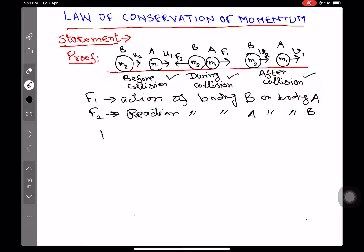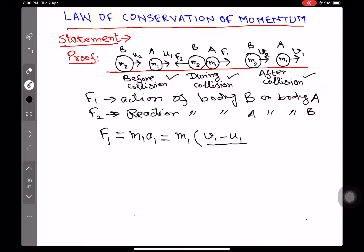Now, F1, the force acting on body A due to body B, equals M1 into A1. According to Newton's second law of motion, force is mass into acceleration. And acceleration is the rate of change of velocity. The change in velocity of body A is V1 minus U1; V1 is the velocity after collision and U1 is the velocity before collision. Suppose the time of collision is T. Then the acceleration of body A is (V1 minus U1) over T.